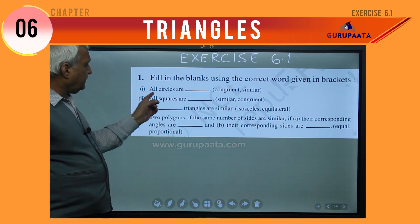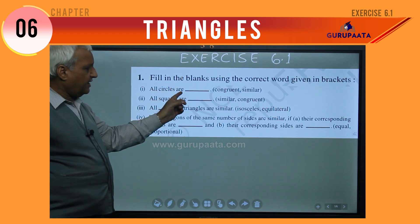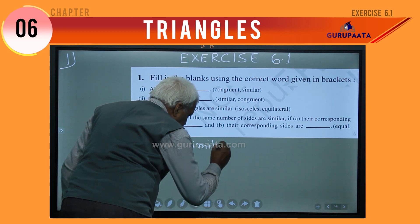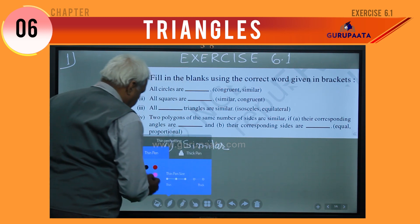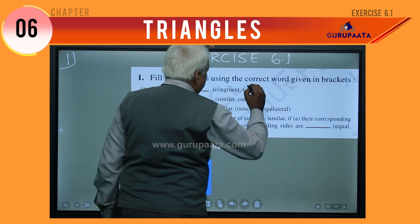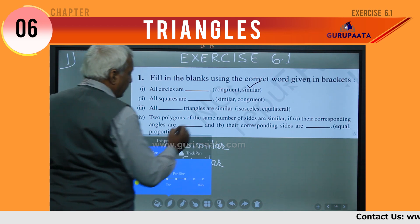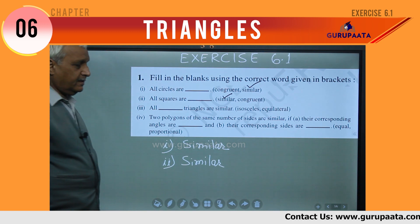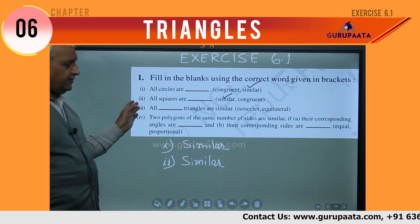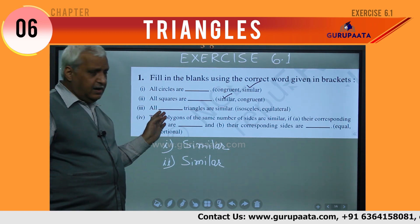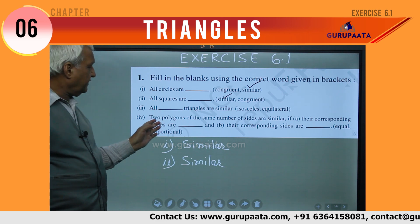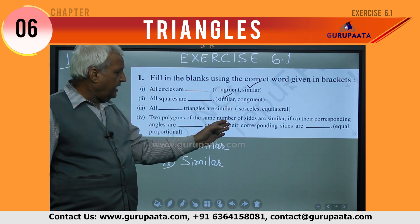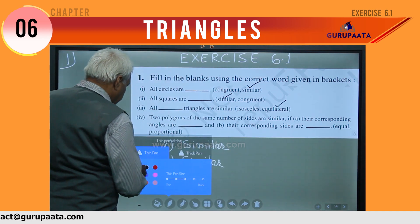We start Exercise 6.1, Question 1: fill in the blanks using the correct word given in brackets. There are 4 questions. I will write the answer and tick the correct answer given in the bracket. The first question: all circles are — whether congruent or similar? The answer is similar.